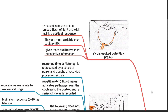Visual evoked potentials are produced in response to a pulse flash of light and elicit mainly a cortical response. They are more variable than auditory EPs and give more qualitative than quantitative information.